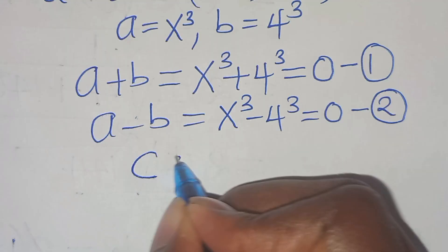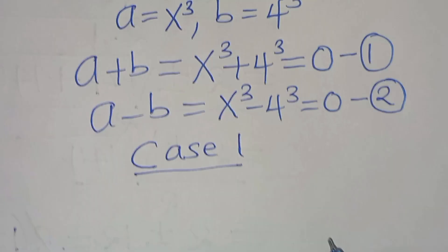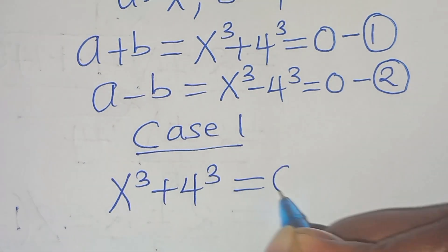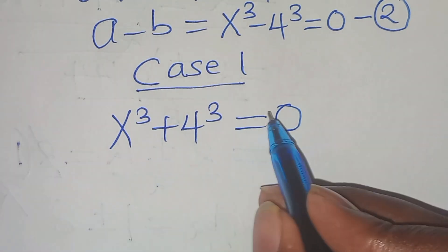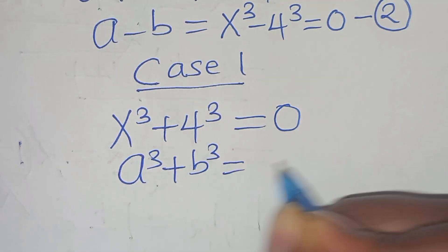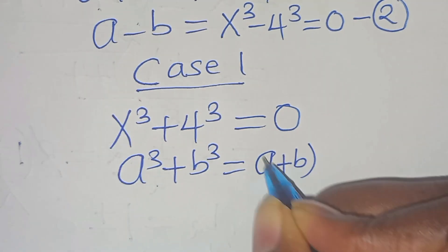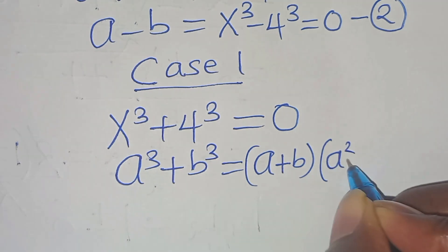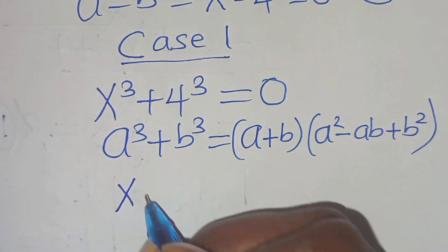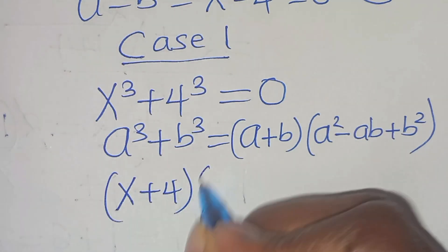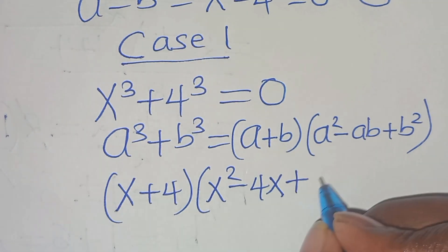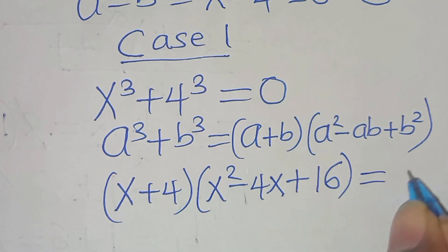Let's start with equation 1, case 1: x to the power of 3 plus 4 to the power of 3 equals 0. This is the sum of two cubes, a³ + b³, which can be expressed as (a + b)(a² - ab + b²). Applying this identity, we have (x + 4)(x² - 4x + 16) equals 0.